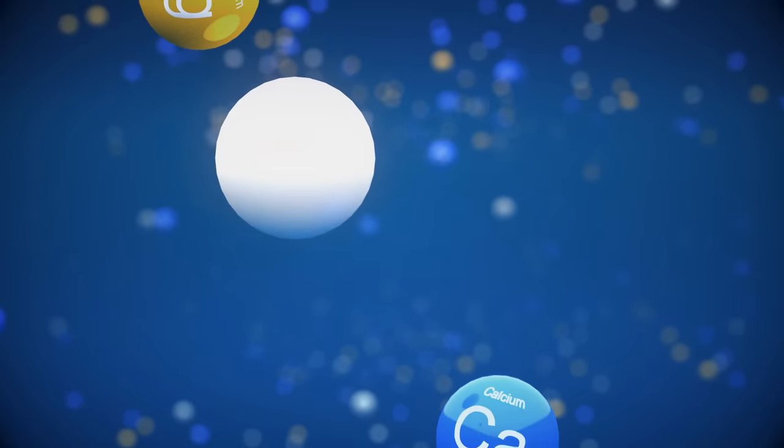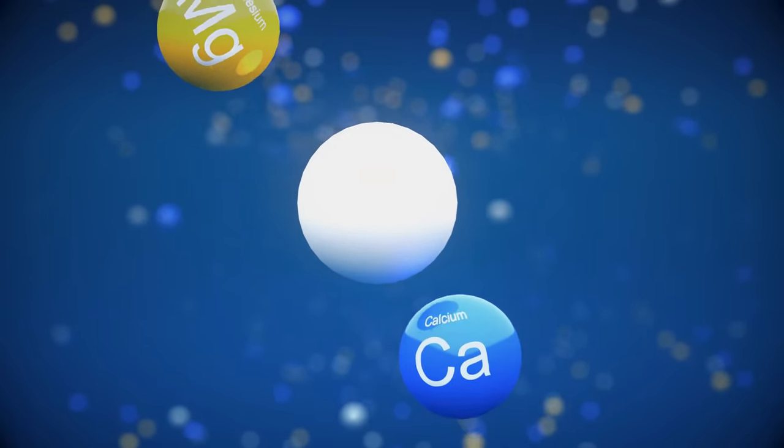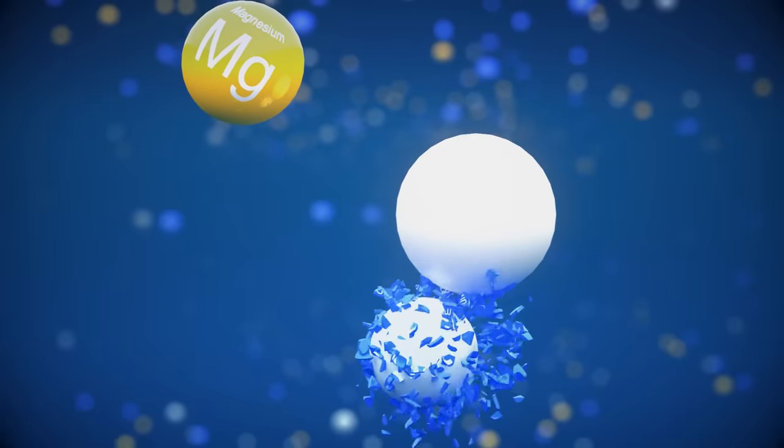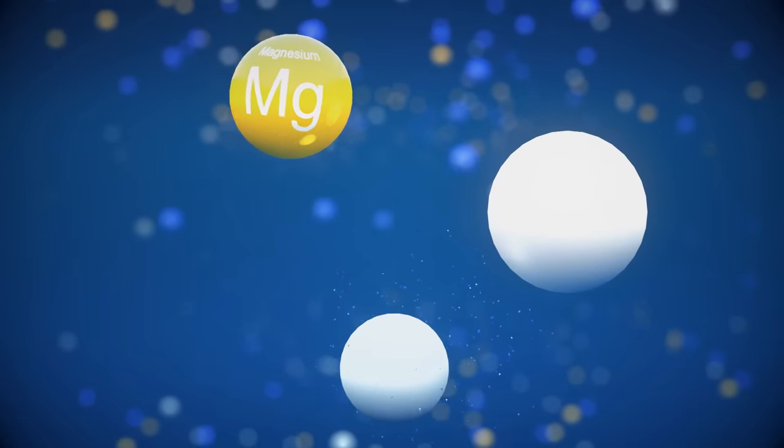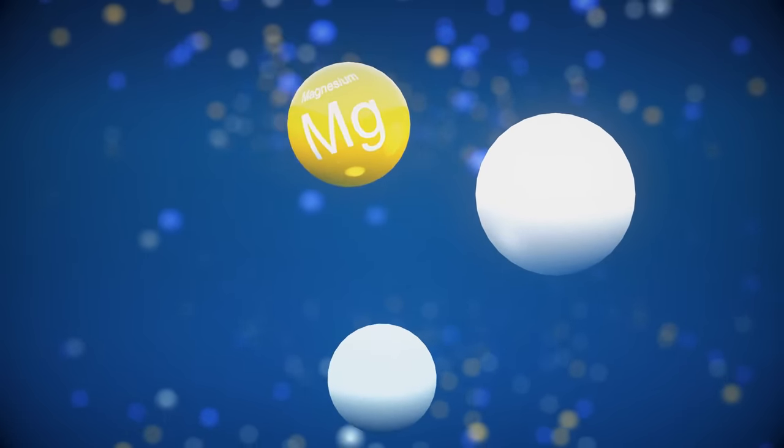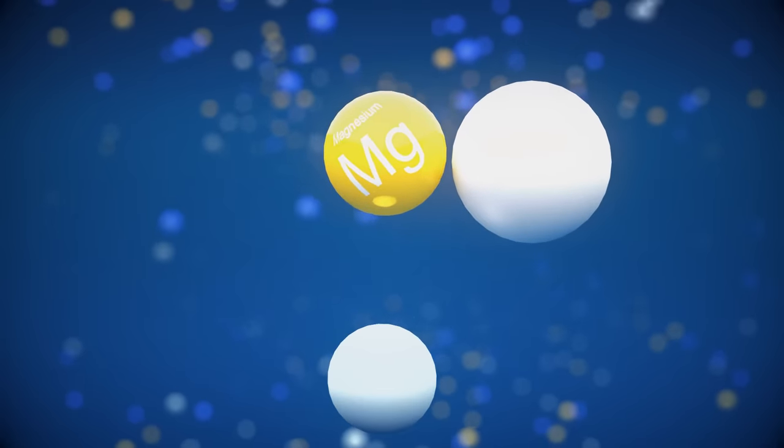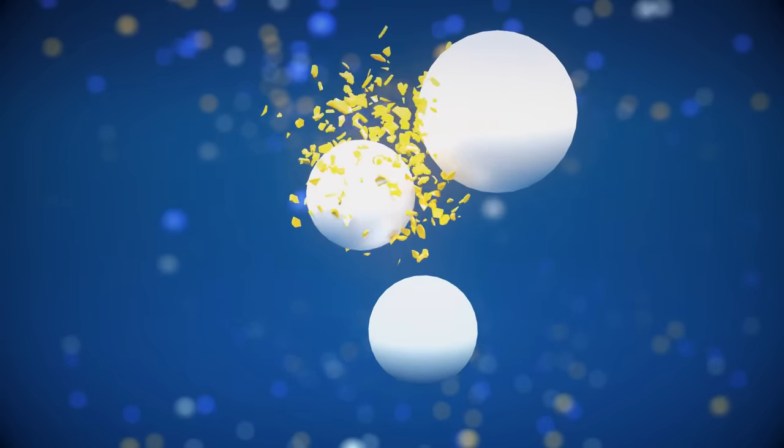As the water passes through the FilterSorb media, calcium and magnesium is transformed into harmless nanocrystals on the surface of the FilterSorb SP3 beads. Once these crystals are formed, they are very stable and unable to form scale.